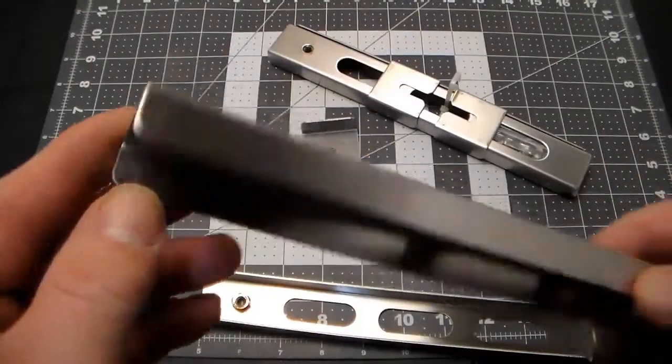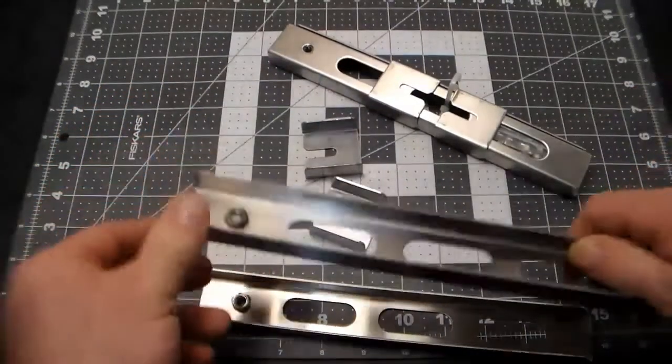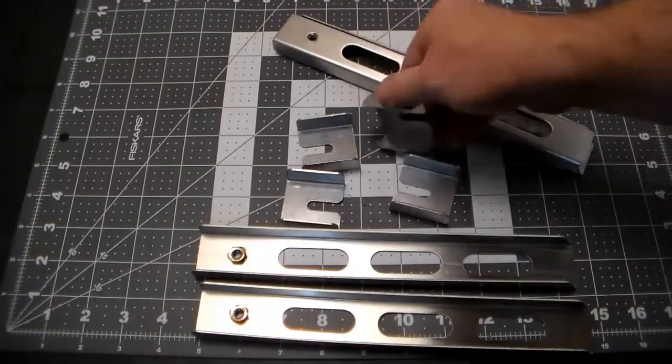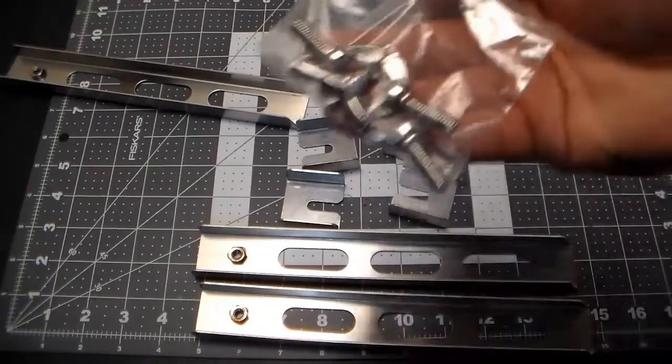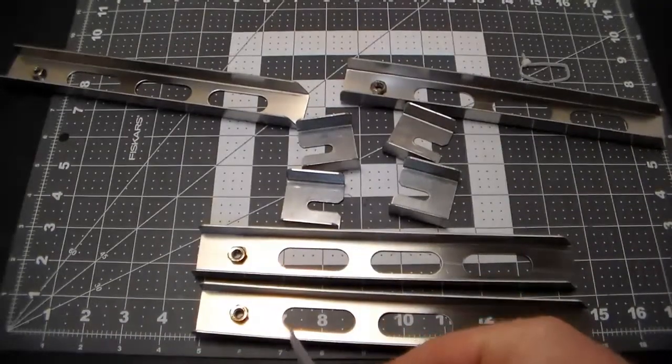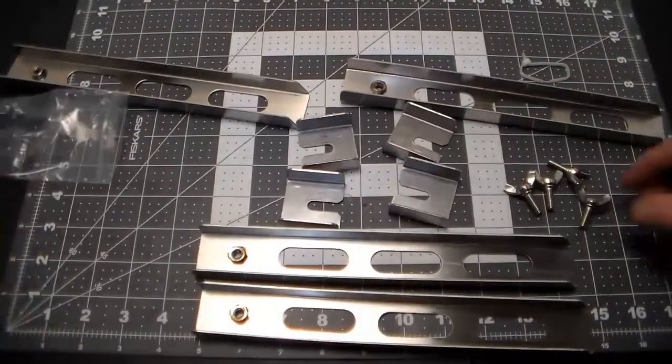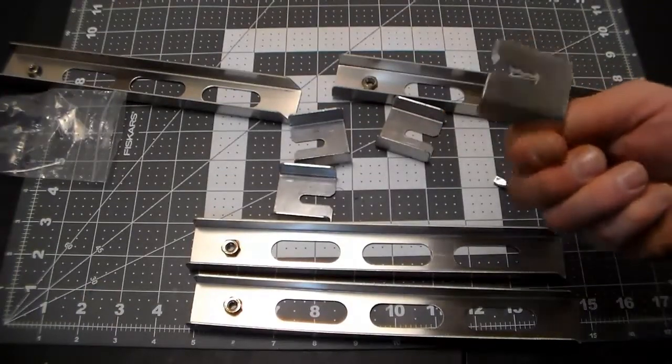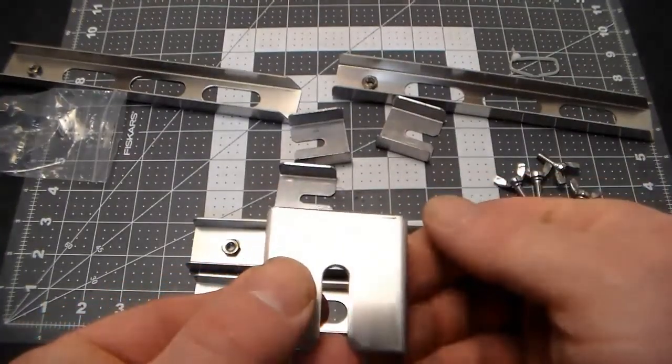Alright, so it looks like they got the nut tack welded on the inside of that leg, those brackets. There's our thumb screws. So four thumb screws, four legs, four of the opposite brackets. Has stamped right on there 304, so 304 grade stainless steel.